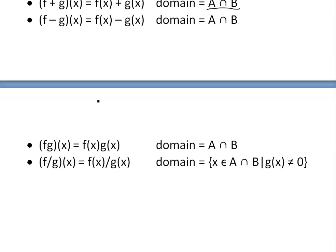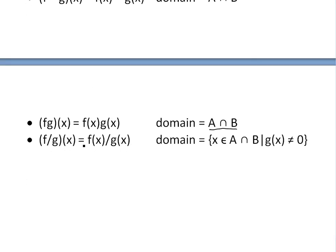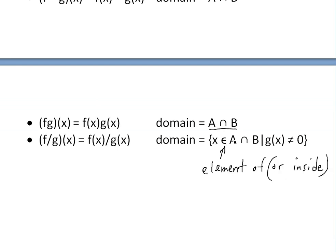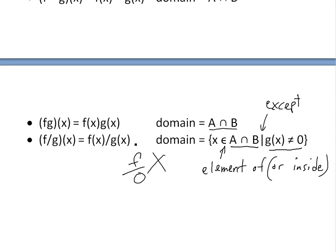Same for multiplication — the domain is the same intersection. The only difference is for division: the domain is still x in A intersect B, except g(x) cannot equal 0, because you can't divide by 0. So (f/g)(x) has the same domain intersection, except wherever g(x) = 0 is excluded.